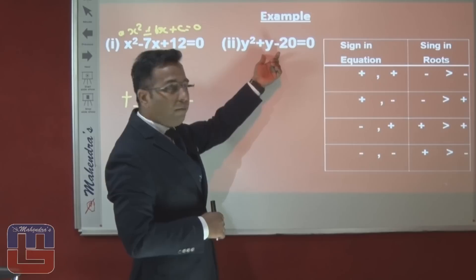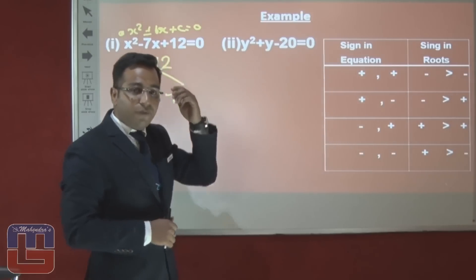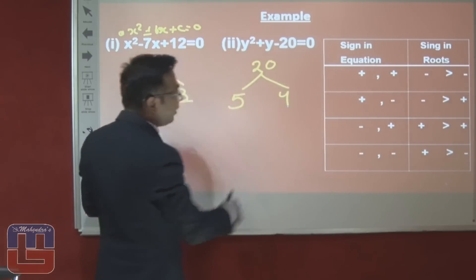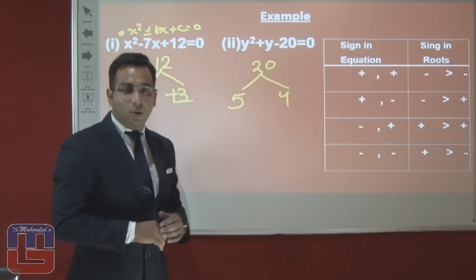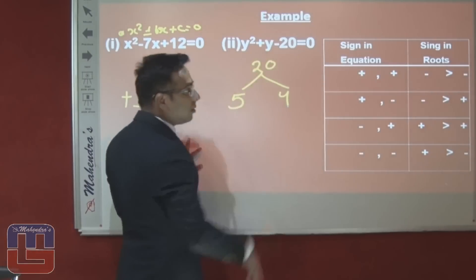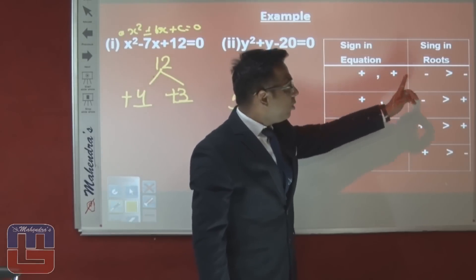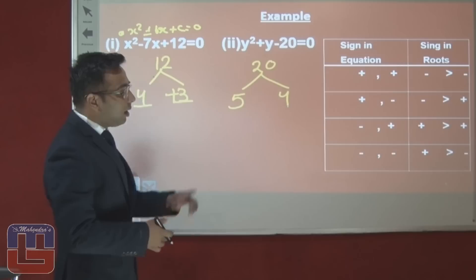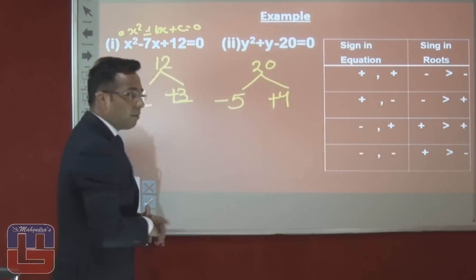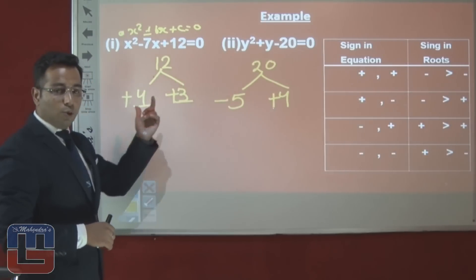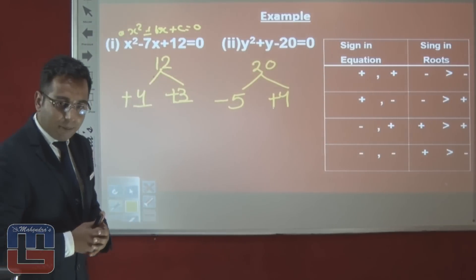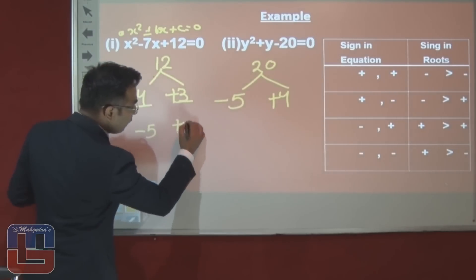Now we find the roots of y from y² + y − 20 = 0. The product of a and c is 1 × 20 = 20. We find factors of 20 that give us 1 when subtracted: 5 and 4, since 5 − 4 = 1. The equation is in plus-minus form, so the roots will be in minus-plus form — the greater magnitude root is negative. So the roots of y are −5 and +4.